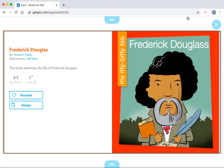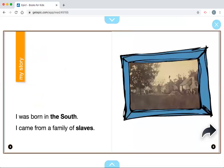The author is Emma E. Haldy and the illustrator is Jeff Bane. So let's find out a little bit more about who Frederick Douglass was and how did he make the world a better place. My story.